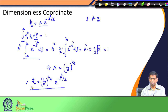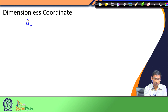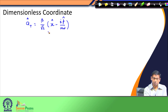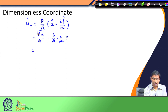Before continuing, we will express the step-up operator a+ in terms of the dimensionless coordinate. Previously we defined it as (beta/sqrt(2)) * (x - i*p/(m*omega)), where x and p are defined in terms of the dimensional coordinate x. Expanding this: a+ = (beta*x/sqrt(2)) - (beta/sqrt(2)) * (i/(m*omega)) * p. You can identify that beta*x equals rho, so the first term becomes rho over sqrt(2).